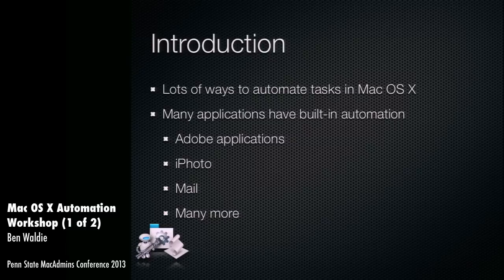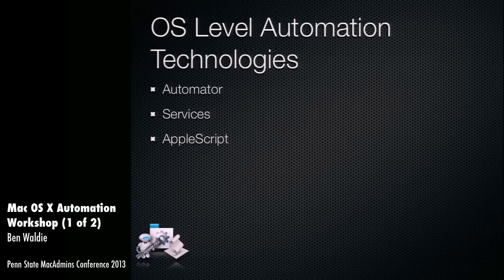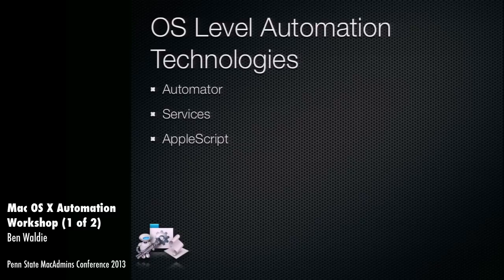Today we're going to talk about three main automation technologies in OS X: Automator, Services, and AppleScript. The first part of the session will focus mainly on Automator and Services. Then if I have time I'll start on AppleScript; if not, AppleScript will start the second session. If we have time I'll touch on some GUI automation in OS X, as well as some of the security changes in Mountain Lion that may affect automation.